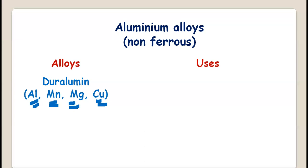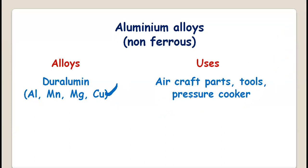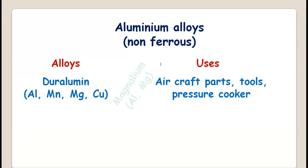One of the reasons for alloying is to make it hard and to increase its tensile strength. Duralumin is much harder than pure aluminium. It is an alloy of aluminium, manganese, magnesium, and copper. Its applications include aircraft parts and the body of the aircraft, and it can also be used in pressure cookers.